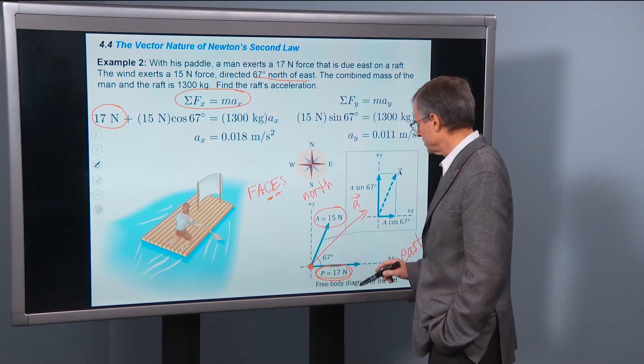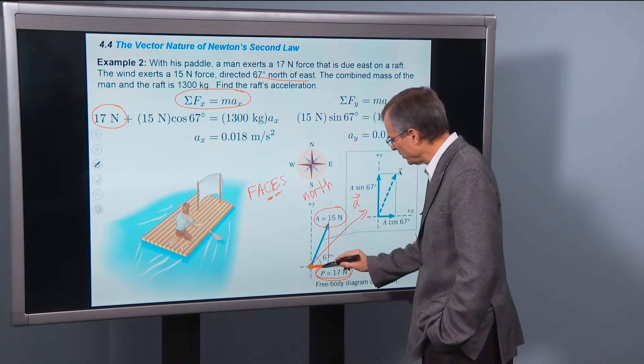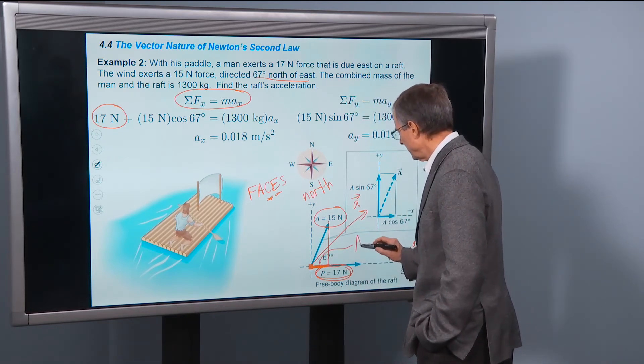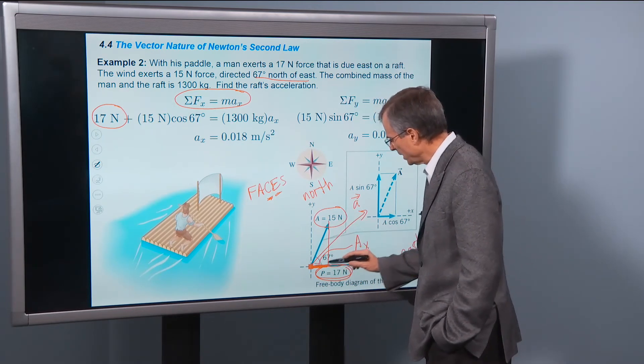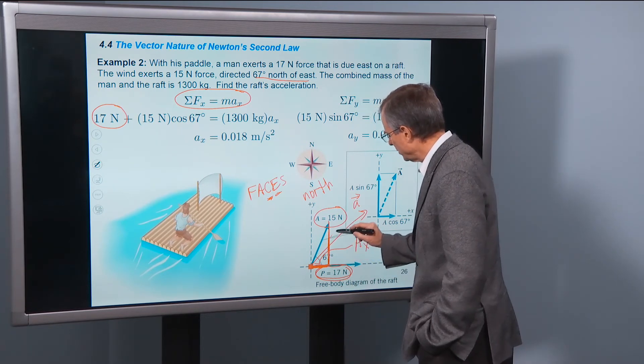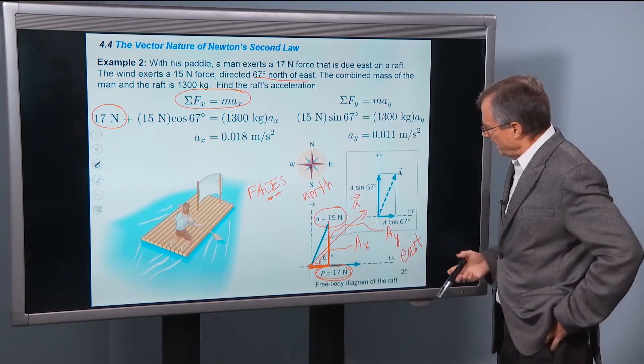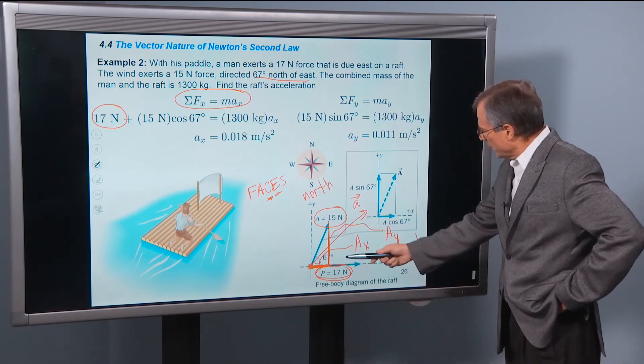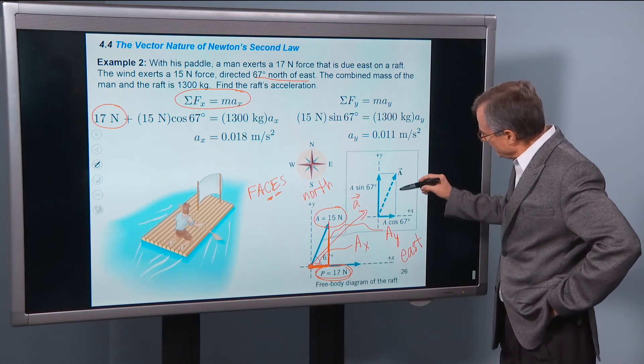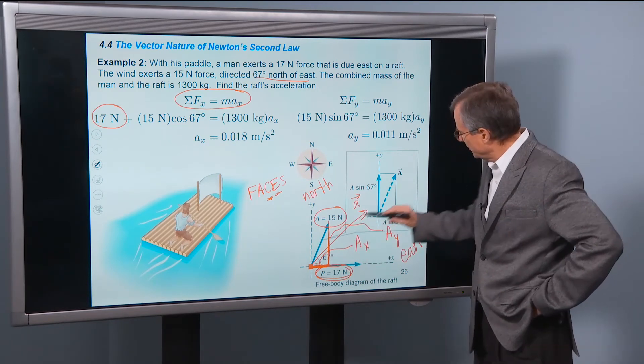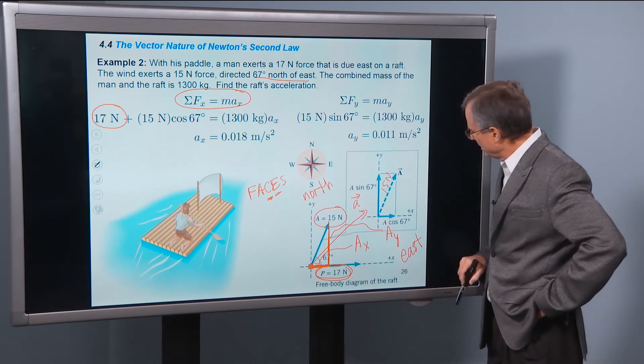So there's the x component of this 17 newton force. Well what about the 15 newton force? It has components both in the x direction, this component right here, the x component of that force A, this horizontal component. And then it also has a y component. And I've expanded this triangle so that you can see it a little bit better.